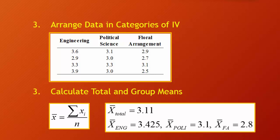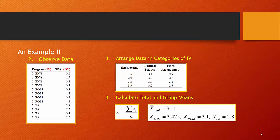Next we observe and arrange our data into the categories of the independent variable. We can see variation within engineering students, within political science students, and within floral arranging students. We calculate the total and group means. The total mean is the sum of all GPAs divided by 12 observations, which gives us 3.11. Group means: engineering students average 3.425, political science students 3.1, and floral arranging students 2.8.